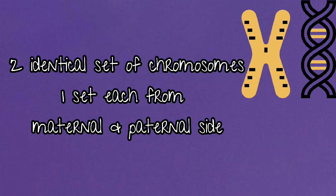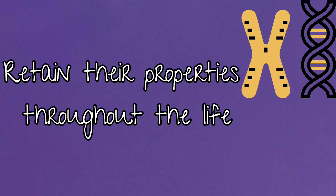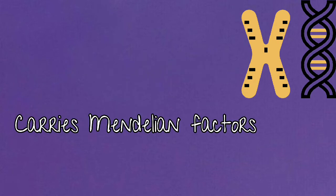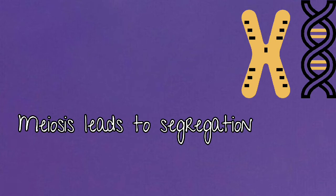The two chromosomes of one type constitute the homologous pair. The chromosomes retain their structural uniqueness, individuality, and continuity throughout the life cycle of an organism. Each chromosome carries specific determinants or Mendelian factors and plays a significant role in the development of an organism from the zygote. In meiosis, synapsis brings together the pairs of homologous chromosomes and leads to their subsequent segregation into the cells.